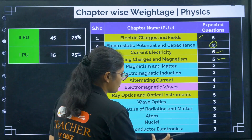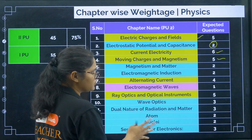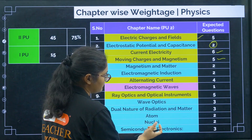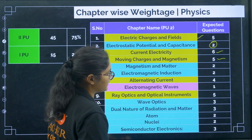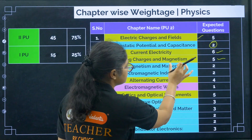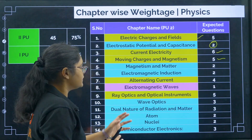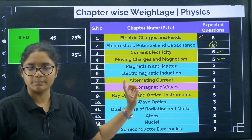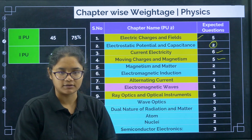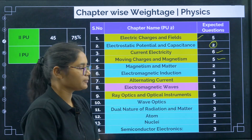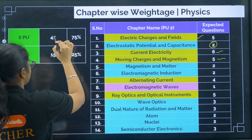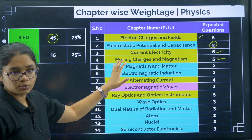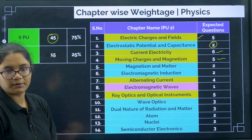Moderate weightage topics where you can expect 2 to 3 questions include Wave Optics, Dual Nature, Atoms, Nuclei, and Semiconductor Electronics. Electromagnetic Waves is a very low weightage topic — just 1 mark question. Basically, you can expect 40 to 45 questions from PU2 and 15 questions from PU1 in physics.